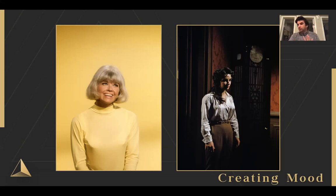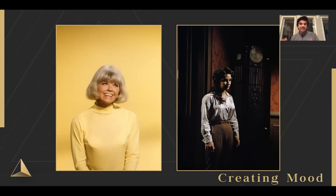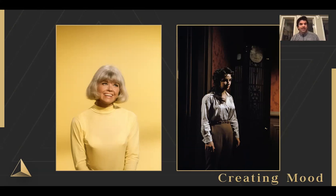Here are two relatively similar subjects — an individual female in a room — but with very different lighting. On the right, there's a lot of contrast and deep shadows. Her screen-left eye is super dark — we can't even see it — suggesting something hidden or sinister. On the left, she's almost frontally lit, barely any shadows, soft and bright with colorful colors. Same subject matter, totally different mood.